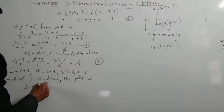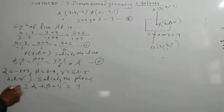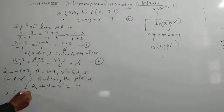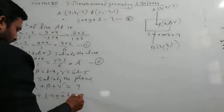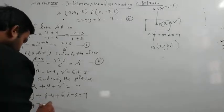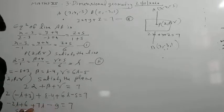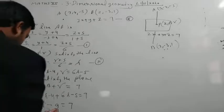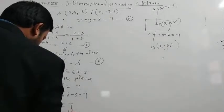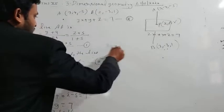Substituting alpha, beta, gamma: 2(minus lambda + 3) + (lambda minus 4) + (6 lambda minus 5) = 7. So minus 2 lambda + 6 + lambda minus 4 + 6 lambda minus 5 = 7, giving 5 lambda minus 3 = 7, so 5 lambda = 10, which gives lambda = 2.